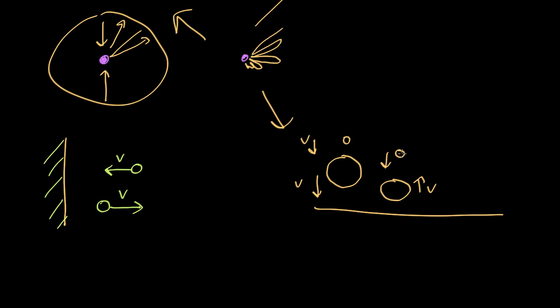So from the big ball's point of view, the small ball is approaching it at speed 2v, and so afterwards, it'll leave it at speed 2v. So after this, the big ball is still moving up at speed v. We're assuming it's much bigger than the small ball, so it isn't much affected by the impact.